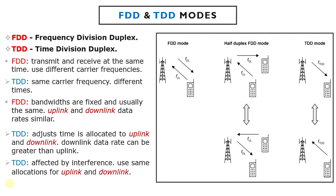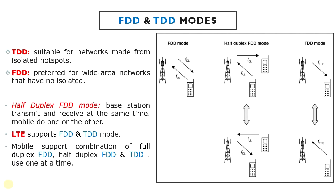TDD mode can be badly affected by interference — for example, if one base station is transmitting while a nearby base station is receiving. To avoid this, nearby base stations must be carefully time-synchronized and must use the same allocations for uplink and downlink so they can transmit and receive at the same time. This makes TDD suitable for networks made from isolated hotspots, where each hotspot can have a different timing and resource allocation. In contrast, FDD is often preferred for wide area networks that have no isolated regions.